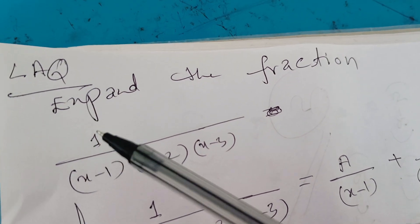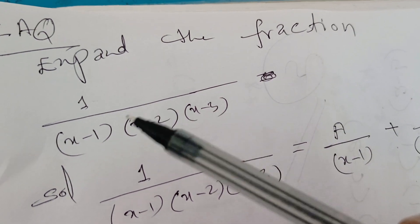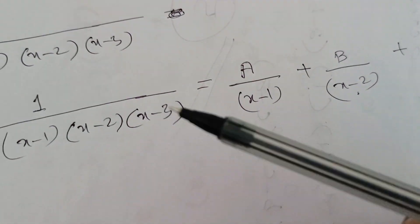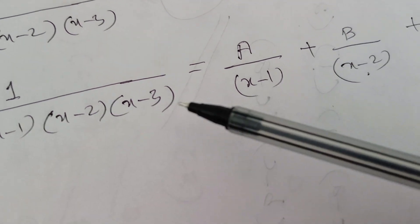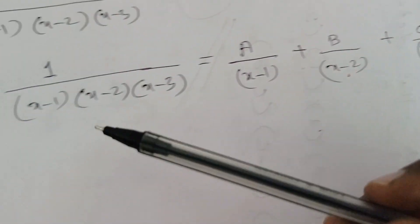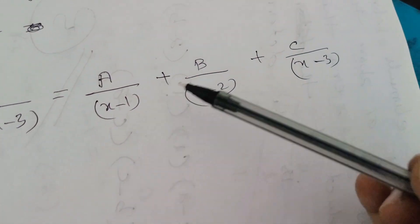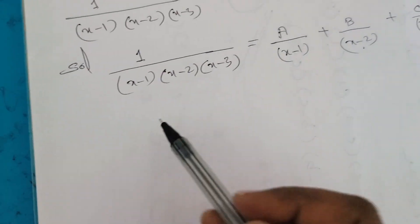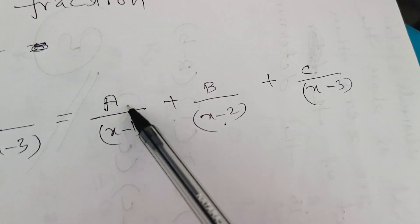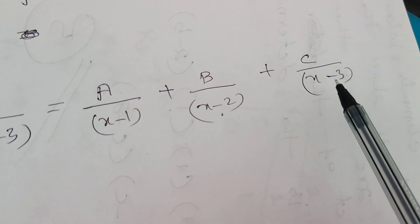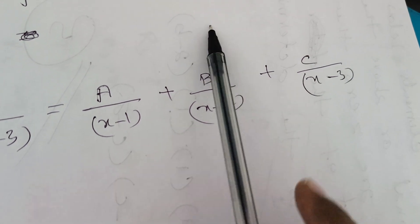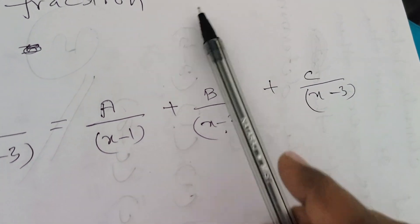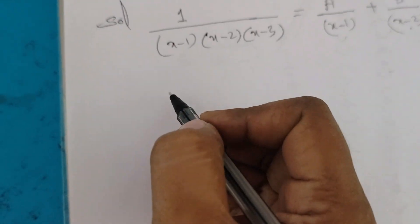This is a long answer type question. We have to expand the fraction 1 by (x-1)(x-2)(x-3). This can be written as 1/[(x-1)(x-2)(x-3)] = A/(x-1) + B/(x-2) + C/(x-3). Now we have to take the LCM: A is multiplied by (x-2)(x-3), B is multiplied by (x-1)(x-3), and similarly C is multiplied by (x-1)(x-2).